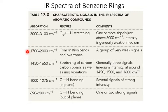One thing that may not have been covered is that in the region of 1,700 to 2,000 wavenumbers, we see what are called combination or overtone bands. These sort of look like regular wave-like patterns, and we'll see an example on the next slide. That's characteristic of the presence of a benzene ring, but again, sometimes we see them and sometimes we don't.